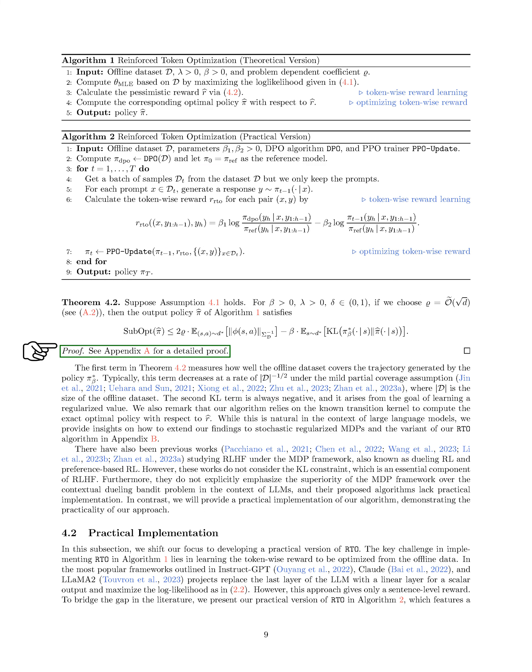We provide a theoretical version of RTO with guaranteed sample complexity and a practical implementation to align with real-world scenarios. In the theoretical version, we focus on the offline setting and assume access to a dataset containing trajectory pairs with different rewards. We assume a linear reward function and learn the reward function through maximum likelihood estimation. Our algorithm relies on the known transition kernel to compute the exact optimal policy, and we discuss extending our findings to stochastic regularized MDPs.